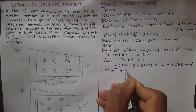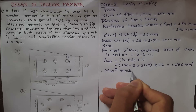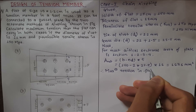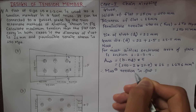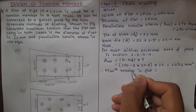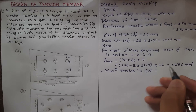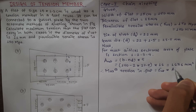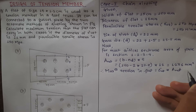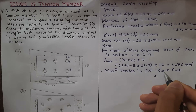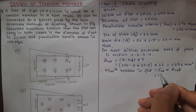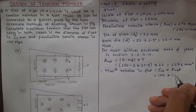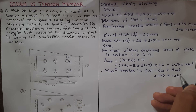Maximum tension in the flat = stress × area = σ_at × A_net = 150 × 1236.